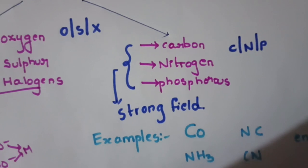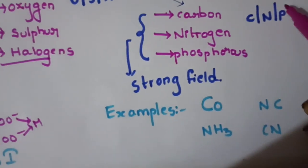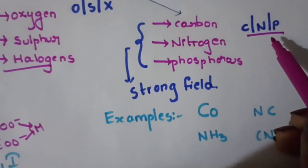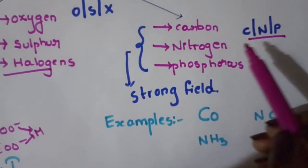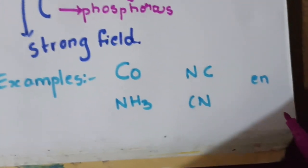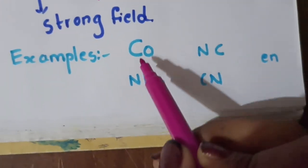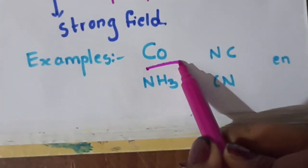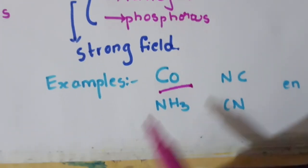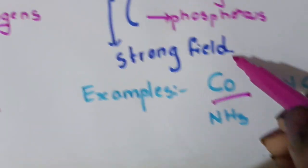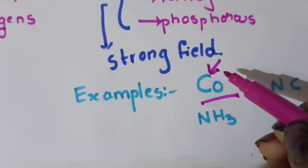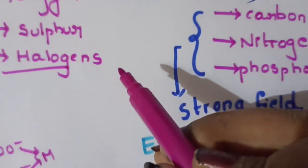For strong field ions: Carbon, Nitrogen, Phosphorus — these three donating atoms are strong field ions. Here Carbon is the donating atom, so Carbon donating atom is a strong field ion.